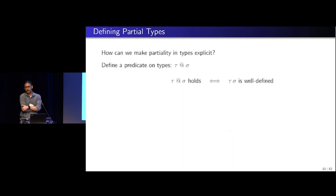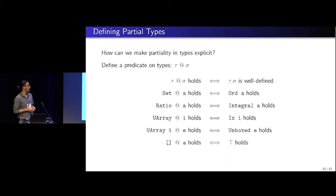So how can we make partiality in types explicit? Well, we are Haskellers, so we can define a predicate on types. Let's call it tau at sigma. And it means it holds exactly when tau applied to sigma is well defined. For example, set at a will hold when odd a holds, because that's exactly when set a is well defined.